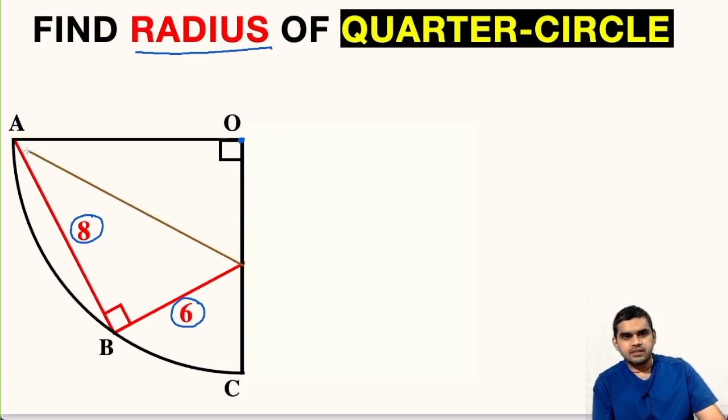For that we will do one modification here. We will join these two points to complete this right triangle. Let us name this point as M. Now let us focus on this triangle ABM. It is a right angle triangle.